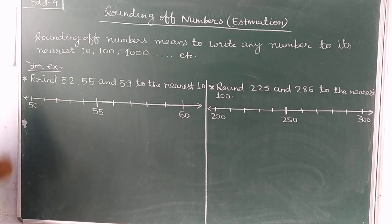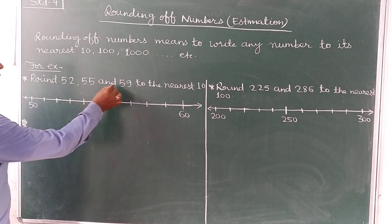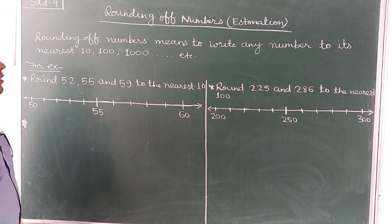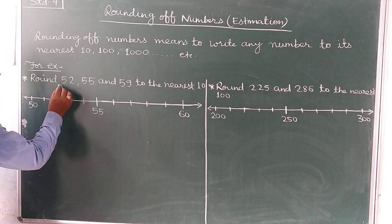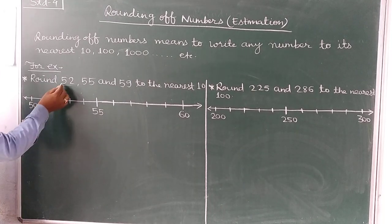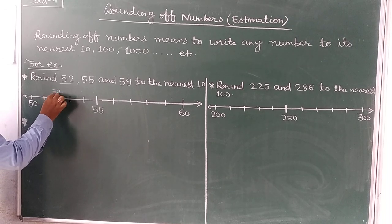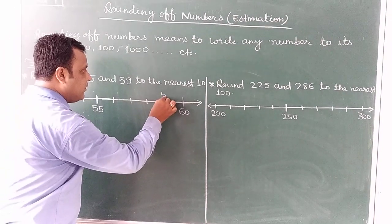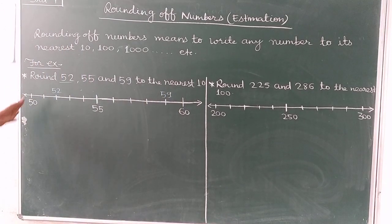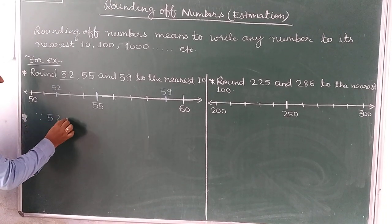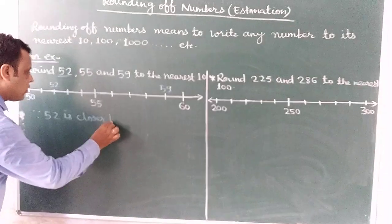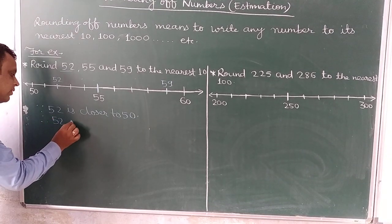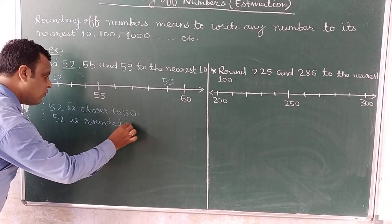Example number 1: round 52, 55, and 59 to the nearest 10. Using a number line, we indicate these numbers. It is 52, and we write 51 and 52 on the number line. 55 is already indicated, and then 56, 57, 58, and 59. Since 52 is closer to 50, therefore 52 is rounded to 50.